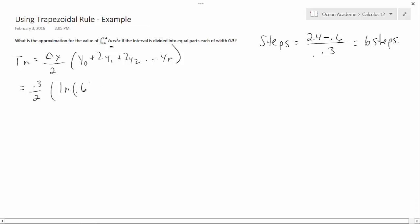So then we do 2 log 0.9 and then 2 log 1.2 plus 2 log 1.5 plus 2 log 1.8 plus 2 log 2.1, and then plus our last step which is log 2.4.